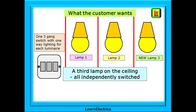Now we can look at what the customer wants. They want a third ceiling light fitted. They have a favourite corner for sitting and reading in the evening and it's always a little dark in that corner. A third lamp on the ceiling, again independently switched from the other two. We will change the existing two-gang switch for a new three-gang switch with each circuit wired as one-way lighting.